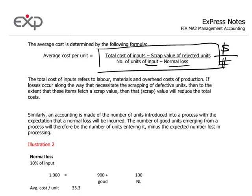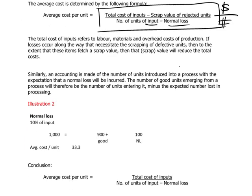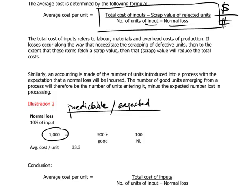Let's look at illustration 2. Suppose our 1,000 units going into a process are going to result almost automatically in losing 10% of the input to defective losses. This is an anticipated and predictable rate of loss. This would be defined as our normal loss, and we would take this loss amount into account in doing our process accounts.